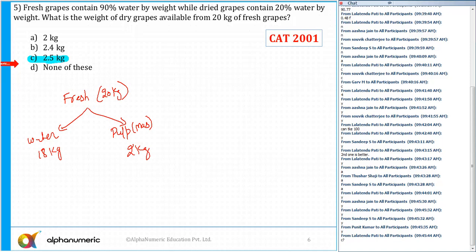Now this fresh grapes, it is getting dry. So in the dried one, the water content will be there and some of the mass or pulp will be there. It contains 20% of water. So water is basically 20%.